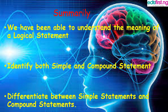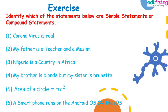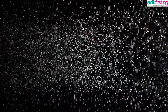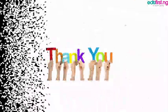Let's test our understanding. Try it out and see if you can answer these questions. Coronavirus is real. My father is a teacher and a Muslim. Nigeria is a country in Africa. Area of a circle is equal to pi r squared. These are statements — identify which is a simple statement and which is a compound statement. Thank you very much and bye for now.